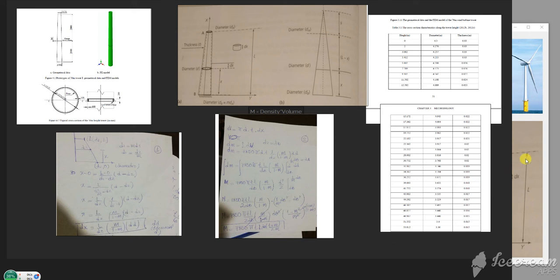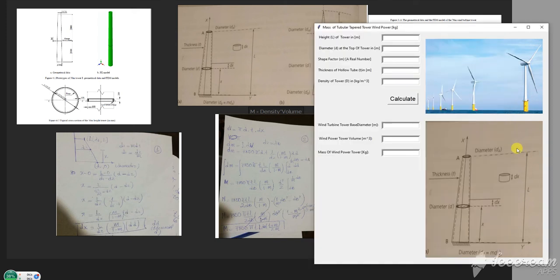Hi, this video gives you an idea how you can use Python programming language to optimize and automate your civil engineering calculations. In this example, I'm going to calculate the base diameter, the volume, and the mass of a tubular tapered wind turbine tower.